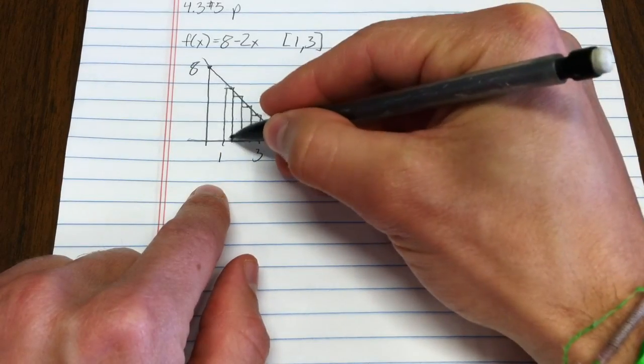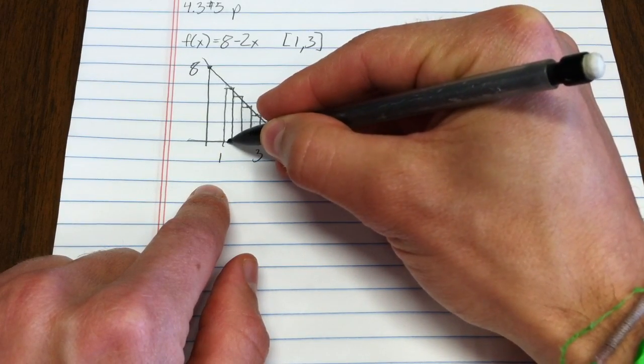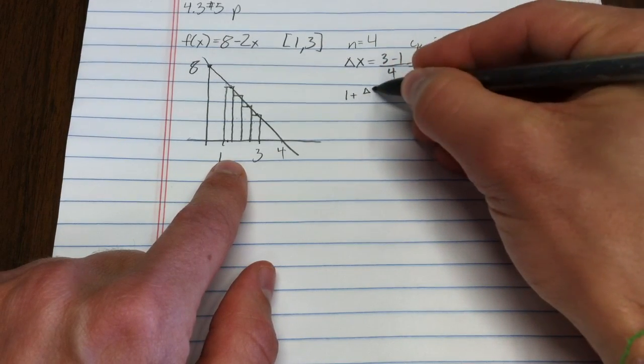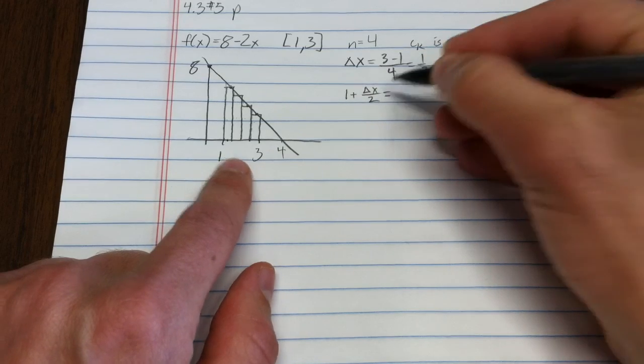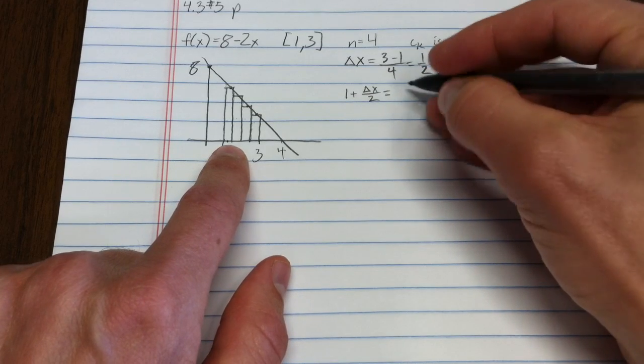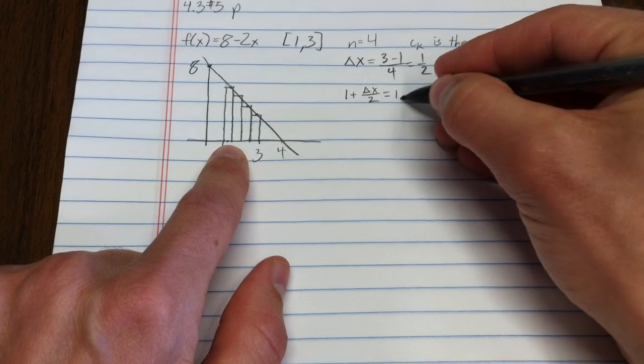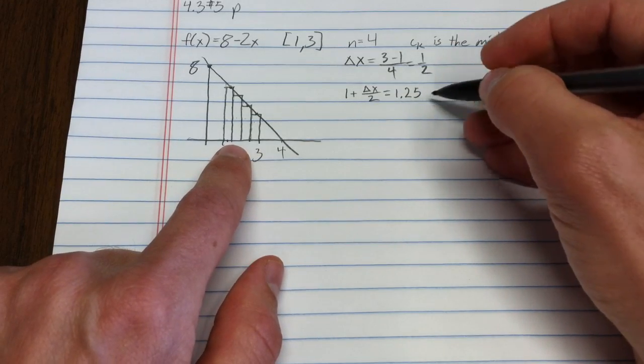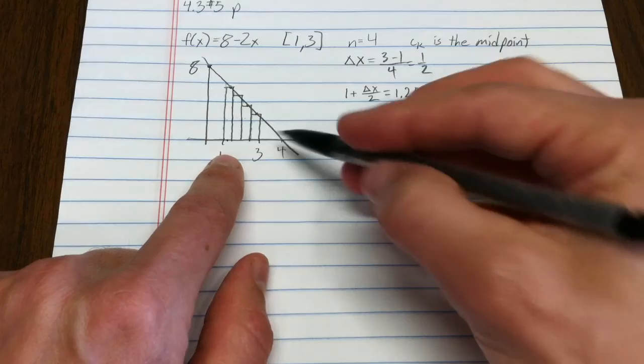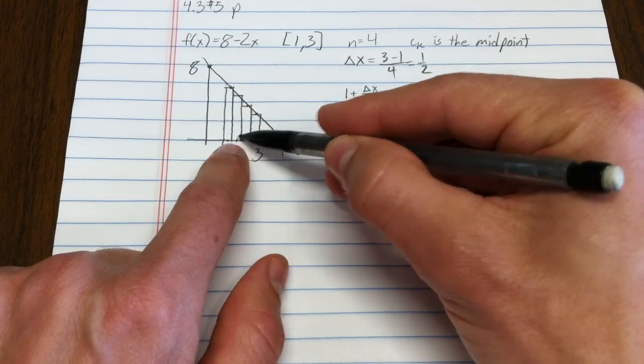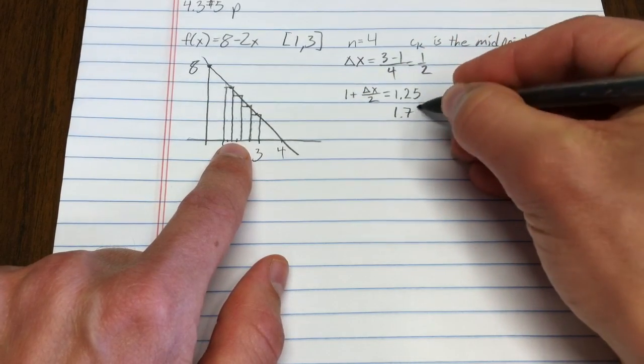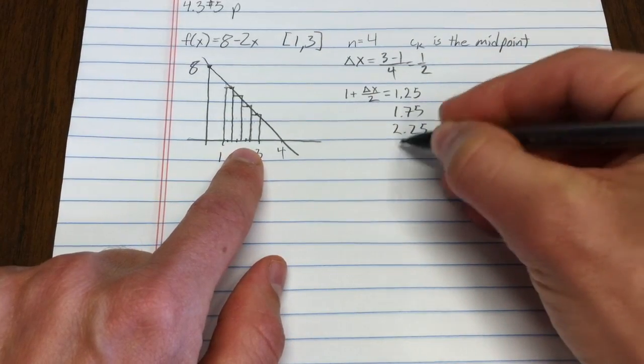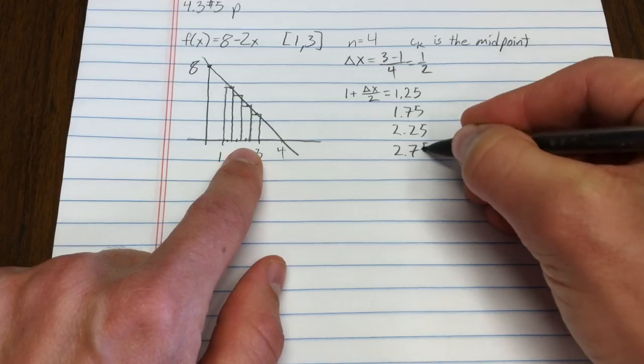So how do I get, if the box is 1 half wide, how do I get the midpoint? Well, I add 1 plus delta x over 2, and the value there is 1.25. So that's going to be the first value. Then where would the other values be? Notice that that's 1 delta x farther, so that's 1.75. This one would be 2.25, and then 2.75.